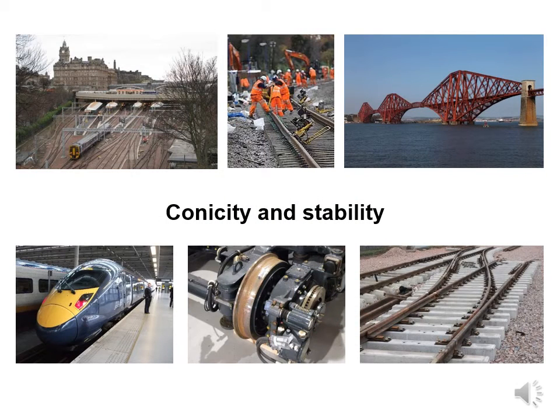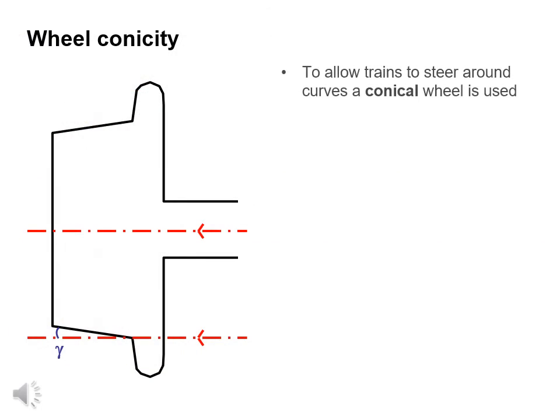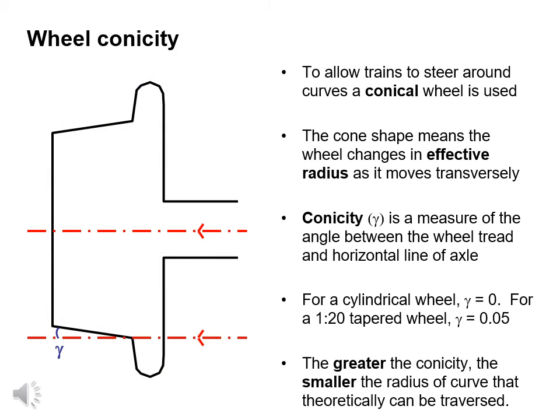Now we're going to look at conicity and stability. A conical wheel allows trains to steer around a curve. The cone shape means that the wheel changes in effective radius as it moves transversely. Conicity, or gamma, is a measure of the angle between the wheel tread and the horizontal line of the axle. For a cylindrical wheel, conicity is zero. For a 1 in 20 tapered wheel, the conicity is 0.05. The greater the conicity, the smaller the radius of curve that theoretically can be traversed.